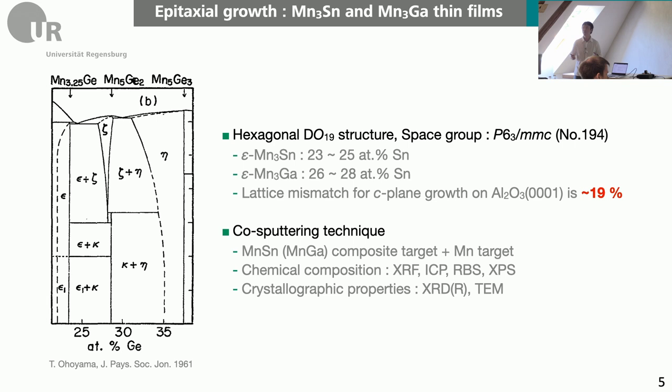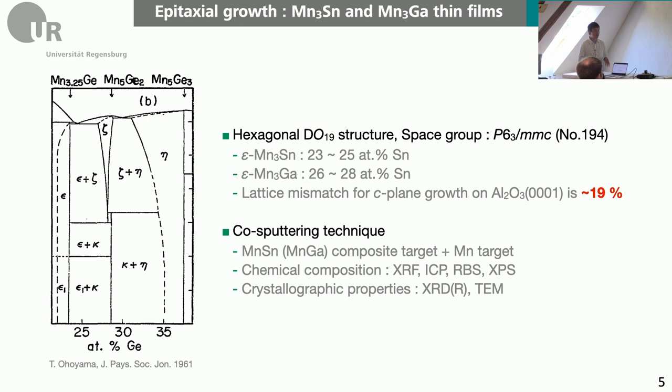You have to be really precise to be able to obtain this particular crystalline structure. It is an absolute prerequisite to have this crystalline structure to be able to observe non-collinear spin structure in this system.